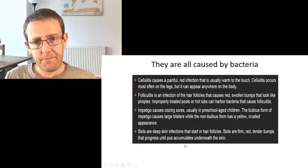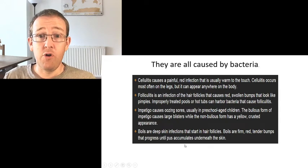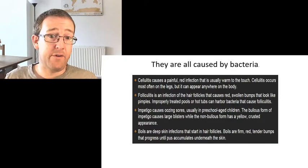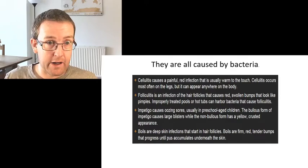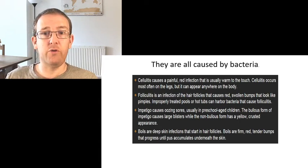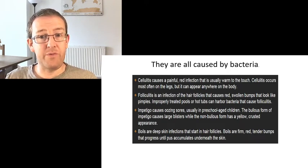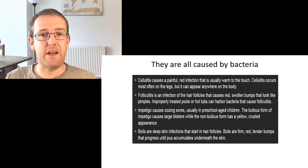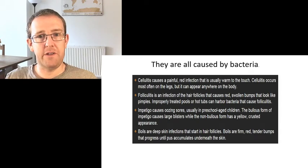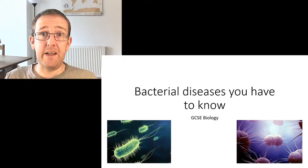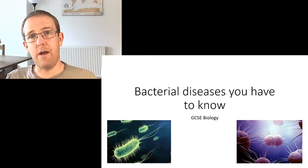Cellulitis is a painful red infection, warm to touch, commonly from the legs but it can be absolutely anywhere. Folliculitis, as it sounds, is an infection of hair follicles that causes a swollen red bump. Impetigo, generally seen in children, presents as oozing sores and large blisters. Boils happen when you've got deep skin infections, often coming on from folliculitis. They are all bacterial diseases.